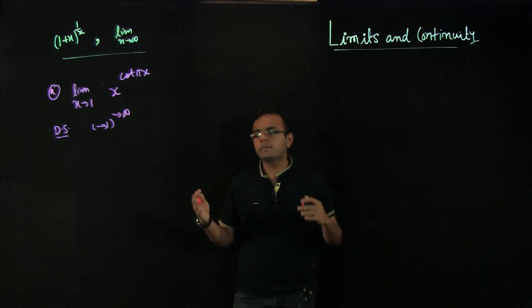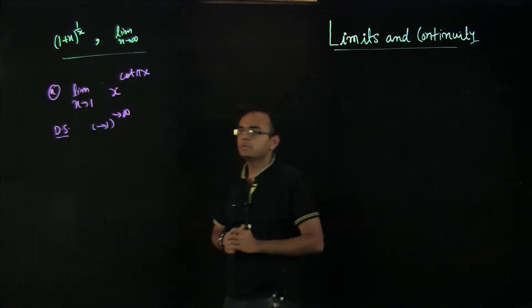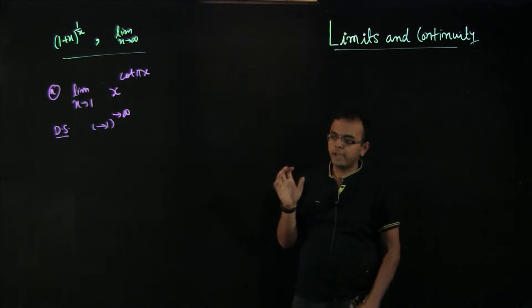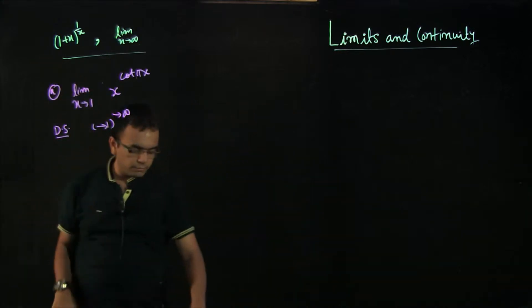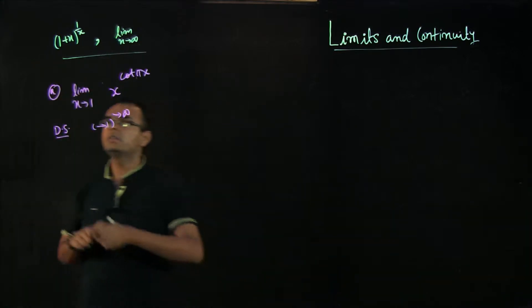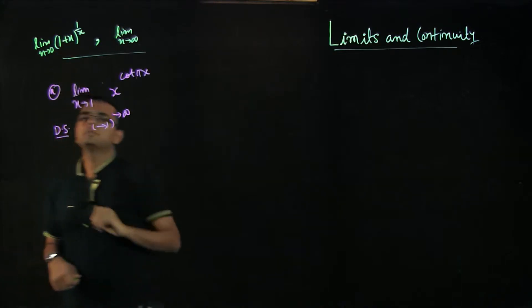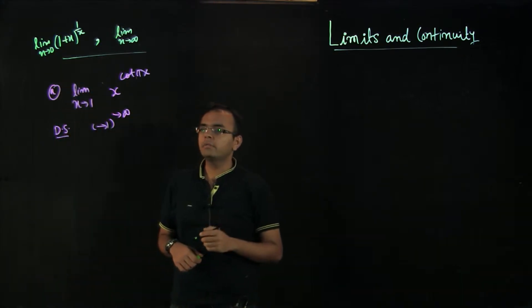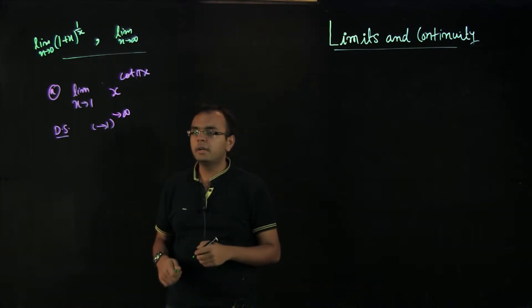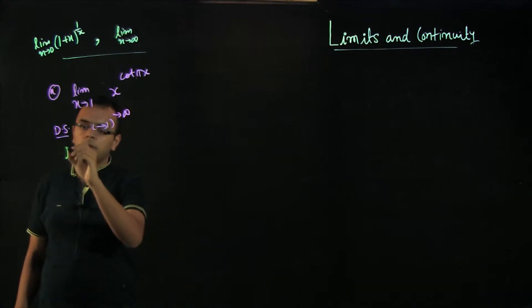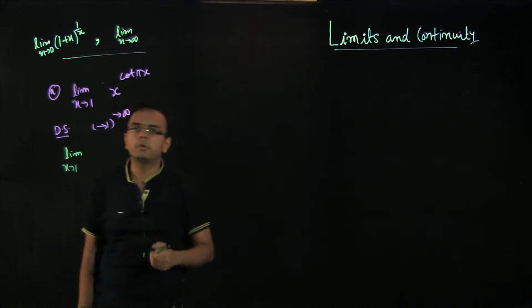This should be very obvious — it should flash directly that this is a clear example of the 1 plus x to the power of 1 by x type form. But here we see x, not 1 plus x, and x was approaching 1, not 0. If you remember the formula, this formula was for 1 plus x when x approaches 0. We have to force the problem into that form.